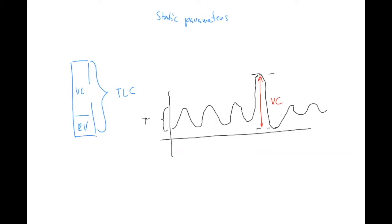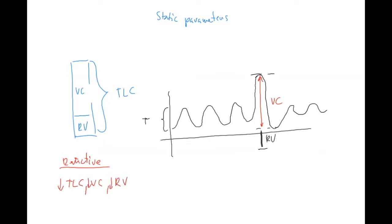Below that is the residual volume. What's important right away: if you have restrictive diseases, basically all the volumes will decrease - total lung capacity, vital capacity, and residual volume will all be decreased.